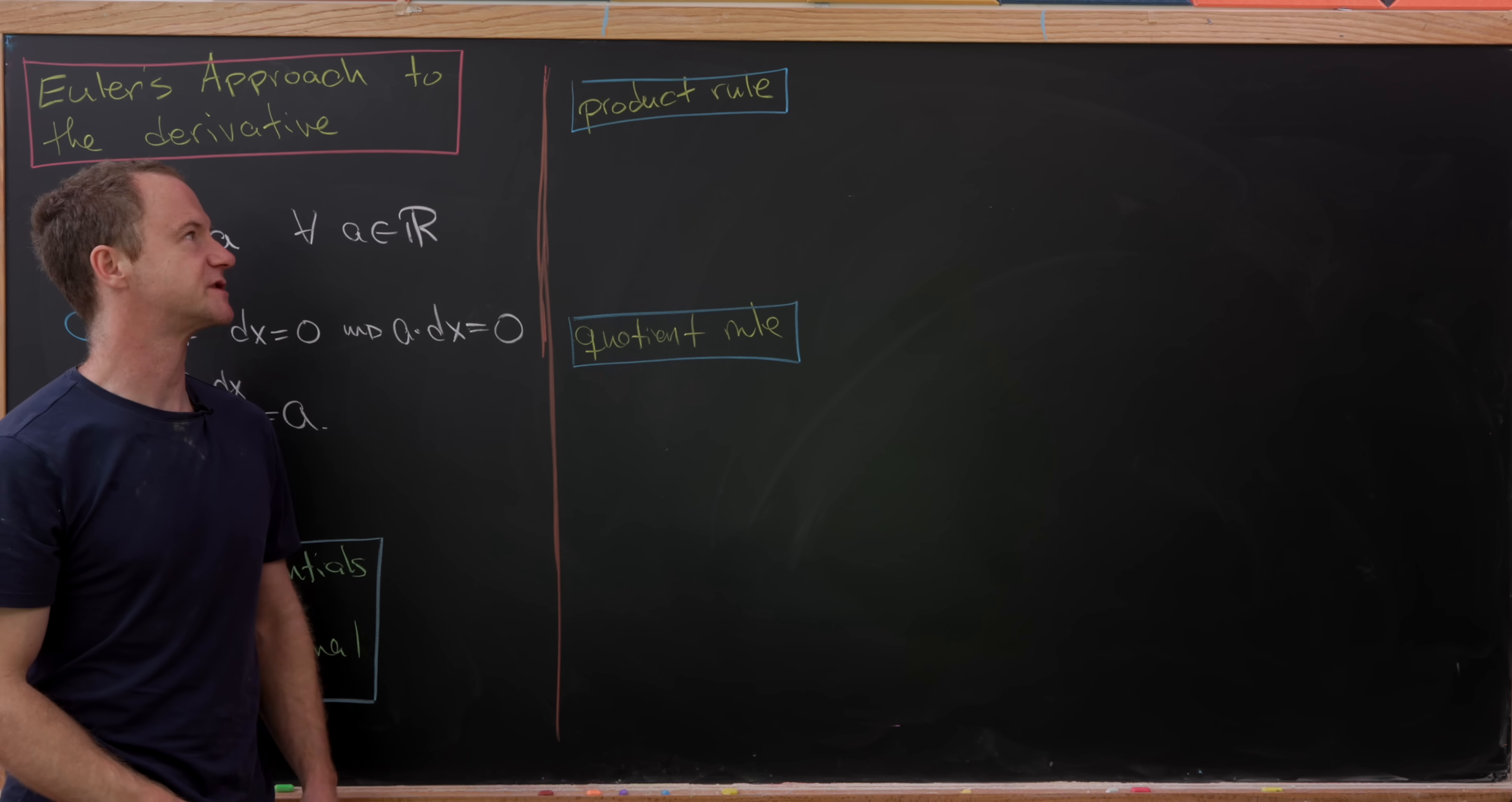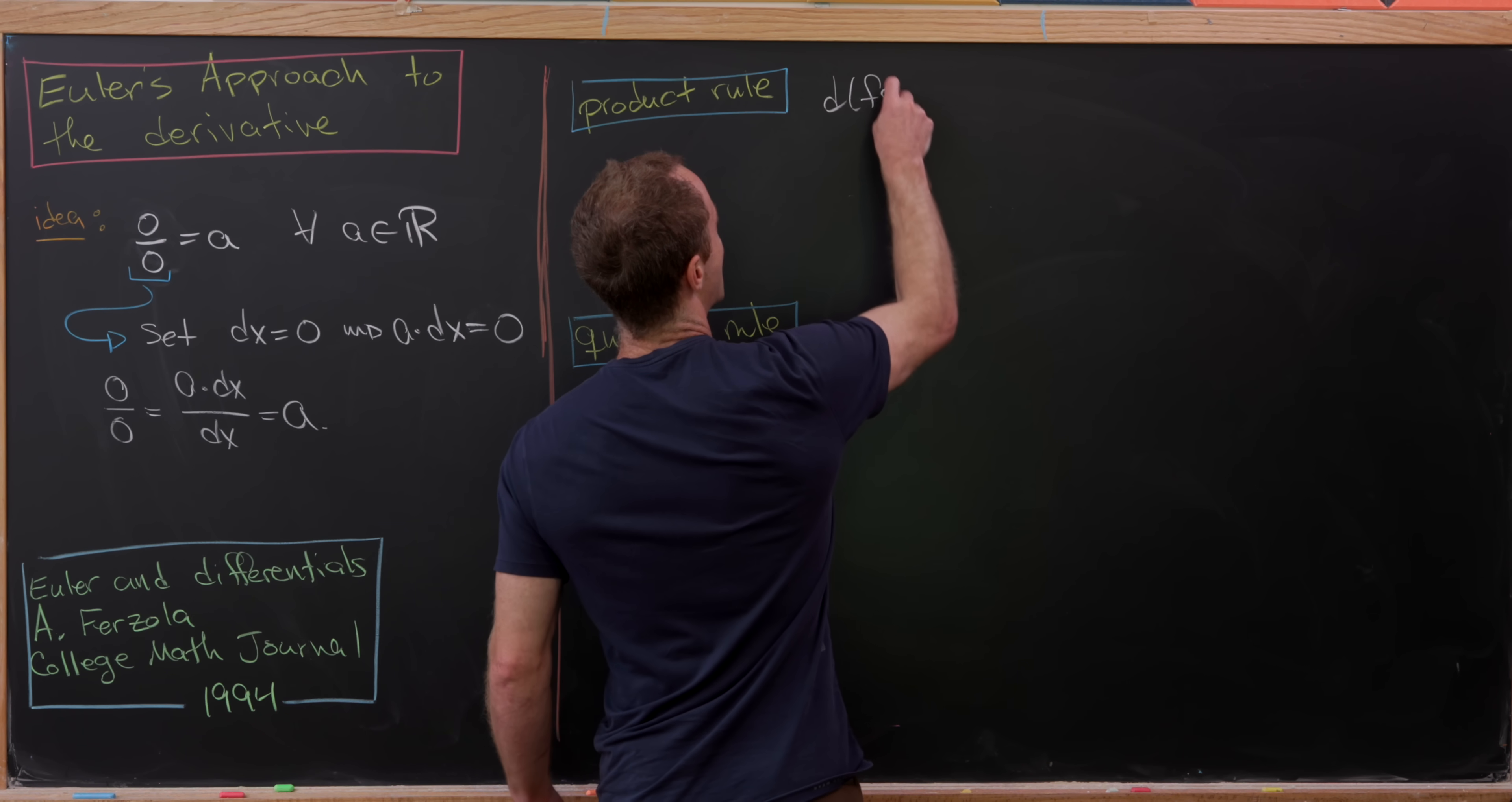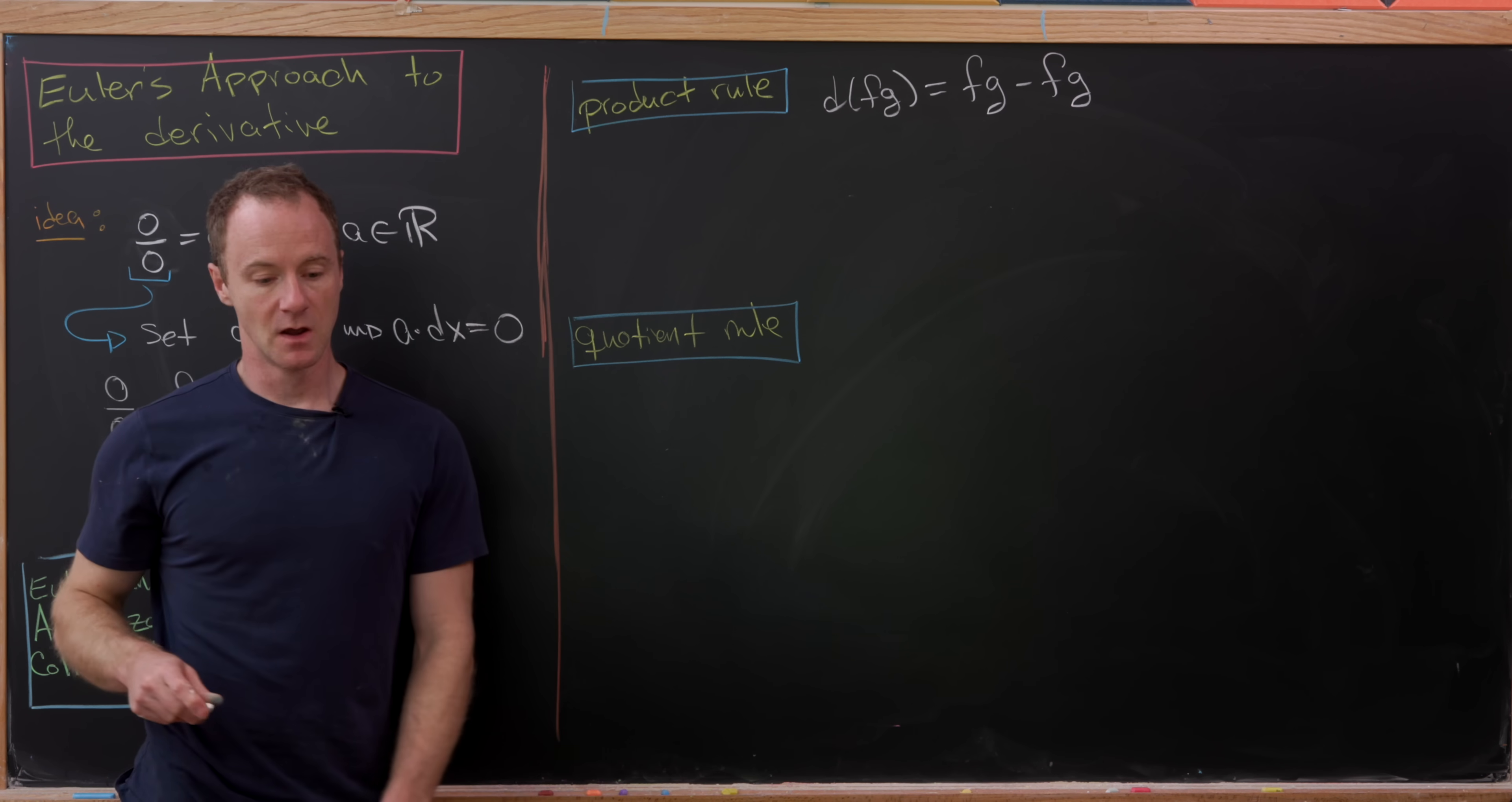Now let's see if we can reproduce the product rule and the quotient rule using these infinitesimals, or in other words, using these versions of zero, which is how Euler thought about it. So if we start with D of FG, notice that's again equal to zero, but zero can now be expanded as FG minus FG.